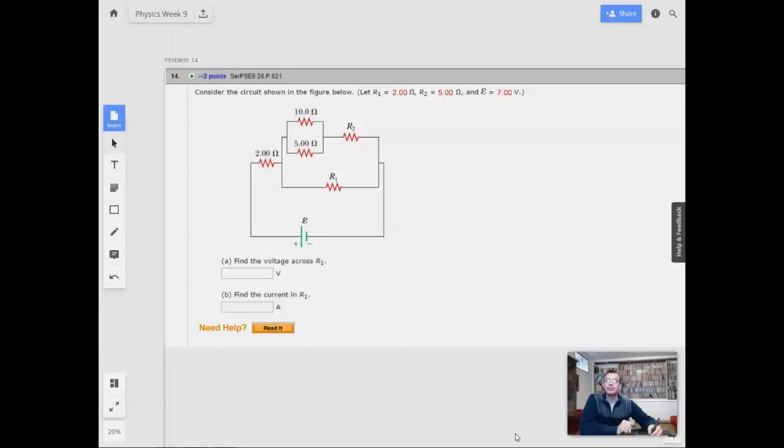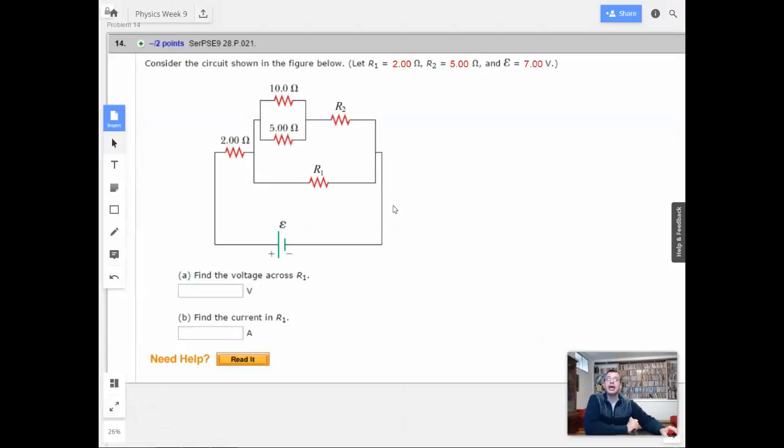Week 9, problem 14. Consider the circuit shown below. Let R1 equal 2 ohms, R2 equal 5 ohms, and EMF, the electromotive force, equals 7 volts. Find the voltage across R1. Find the current across R1.